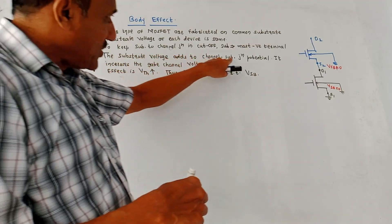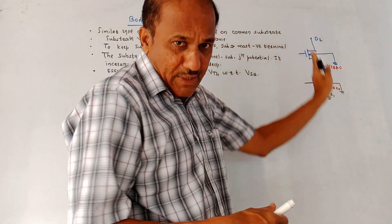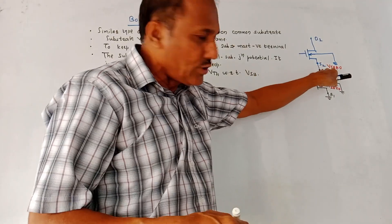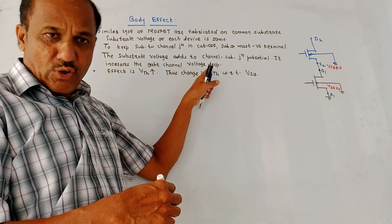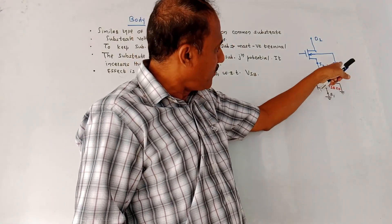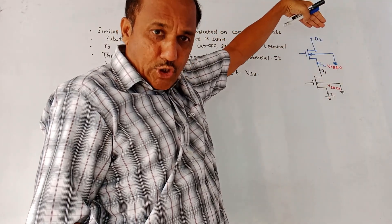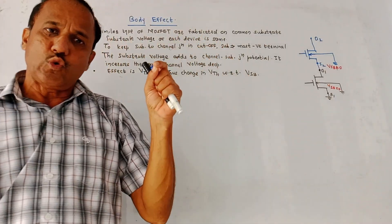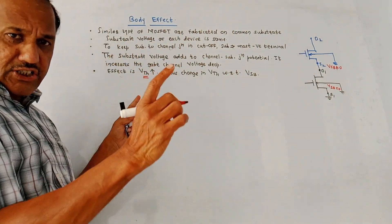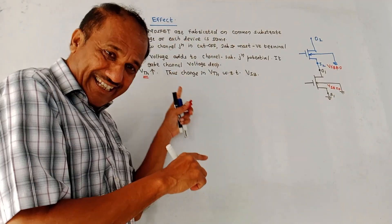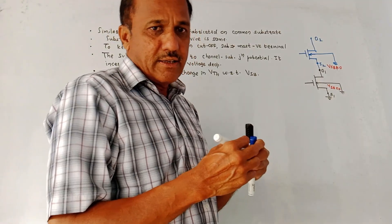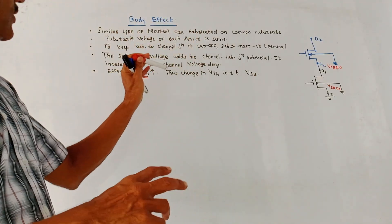The substrate voltage adds to the channel junction potential. As we move further in a series connection, the channel-substrate junction potential increases because VSB is not zero — it increases the gate-to-channel voltage drop. Remember: VSB is zero for the lower MOSFET, but for the upper ones it is not zero. If there are N MOSFET devices in series, VSB goes on changing. The net effect is a change in VTH (threshold voltage) — the threshold voltage increases due to the non-zero value of VSB. This change of VTH with respect to VSB is called the body effect of a MOSFET.